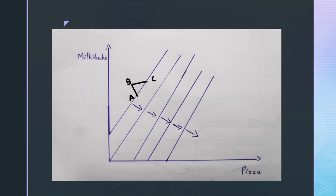In the figure, suppose A shows the consumption bundle 10-5 where he consumes 10 units of pizza and 5 units of milkshake. Suppose we increase the number of units of milkshake to 6, that is to point B. Then to keep him on the same indifference curve, we have to increase the amount of pizzas, that is to point C. The goods desirable to the consumer, such as pizzas, must be increased to compensate for the increased bad good. So the marginal rate of substitution must increase to keep the consumer on the same indifference curve, and thus the indifference curves have a positive slope.